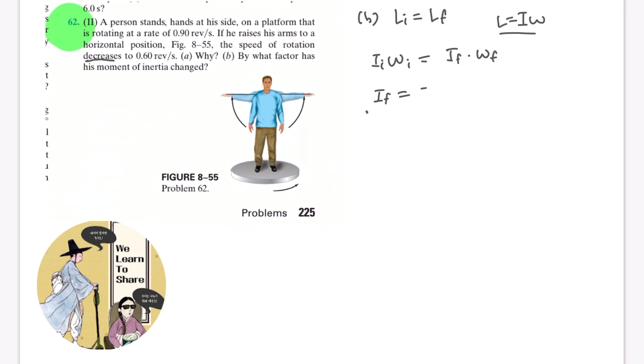And if we organize this formula with I final on the left, it would be I final equals I initial times omega initial over omega final. And let's substitute these values into this formula, which would be I final equals I initial times 0.90 revolution per second over 0.60 revolution per second, which would be 1.5 times the initial inertia. So we can say that the rotational inertia has increased by the factor of 1.5.